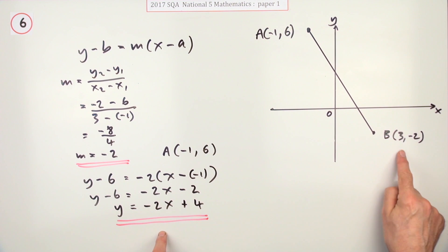You can always check that with this other point. If you put 3 in for x, this equation says the y coordinate should be given by negative 2 times 3, which is negative 6, adding on 4 takes you to negative 2, and it is negative 2, so you've got it right.